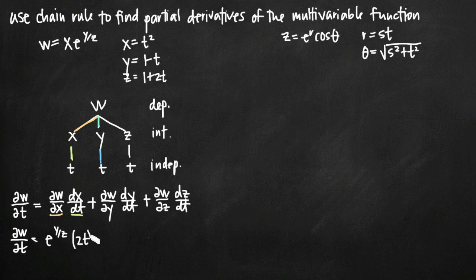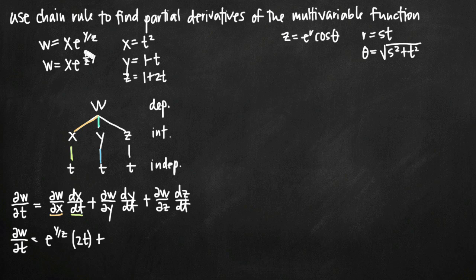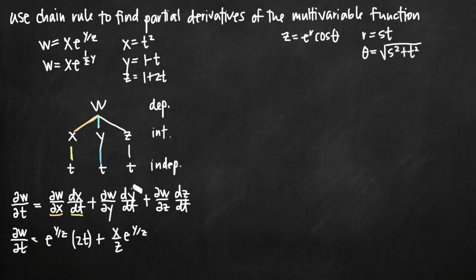Then we add to that the partial derivative of w with respect to y. Here we treat x and z as constants and take the derivative with respect to y. We can look at this as w equals x·e to the (1/z)·y. So x is a constant coefficient on the e term, and 1/z is a constant coefficient on y. We bring that down in front and get x times 1/z, which is just x/z times e to the y/z. Then we multiply that by dy/dt — the derivative of (1 minus t) with respect to t is just negative 1.